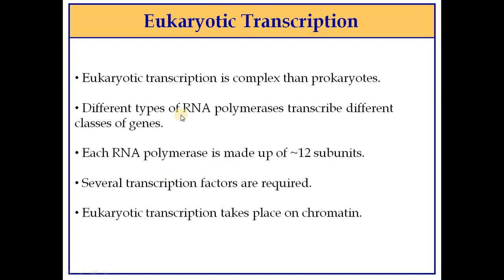Transcription is the process of formation of RNA molecules from the information coded in DNA. As compared to prokaryotes, eukaryotic transcription is a bit complex. Different types of RNA polymerases transcribe different classes of genes in eukaryotes. In prokaryotes, only one RNA polymerase transcribes all the RNA, whereas in eukaryotes there are three different kinds of RNA polymerase involved in transcription.